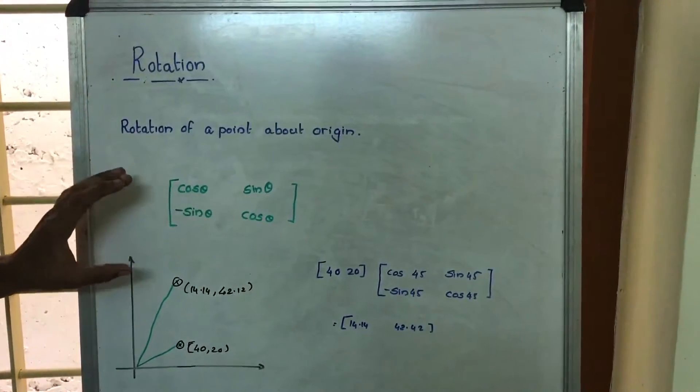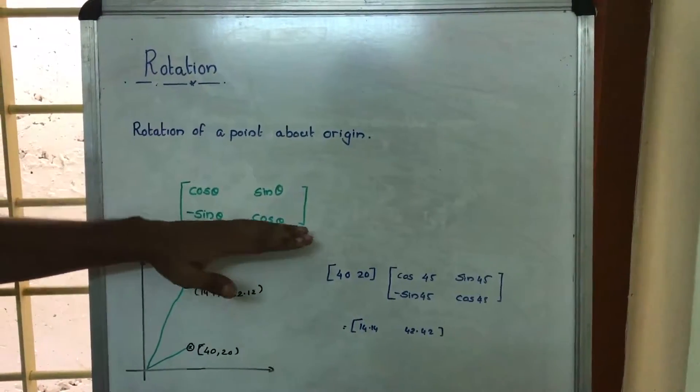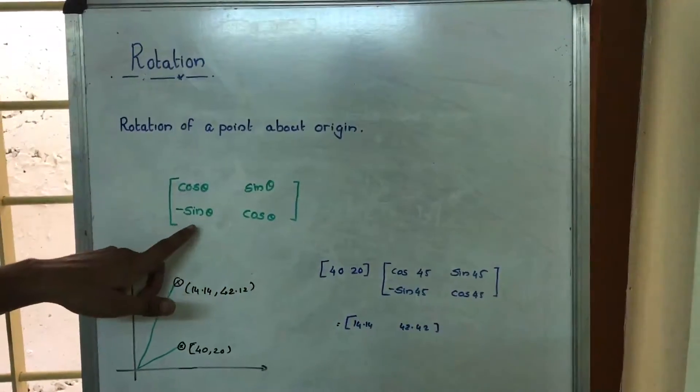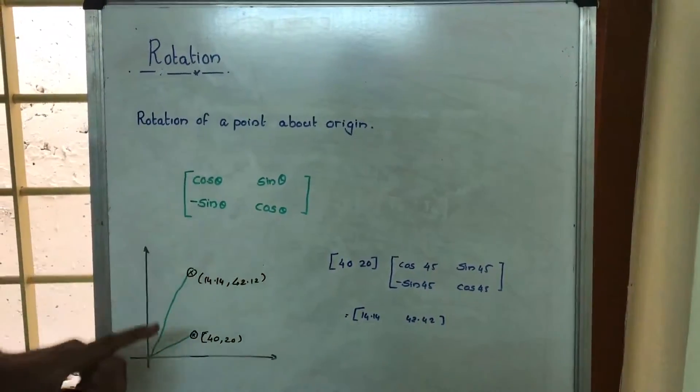Usually what we do is multiply the point with a matrix represented by cos θ, sin θ, -sin θ, cos θ. We will explain this later.